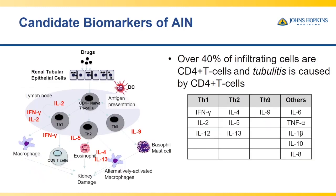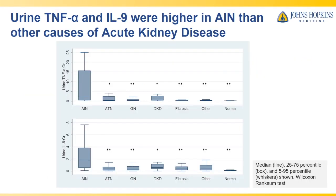These are our candidate biomarkers. We looked at the pathophysiology of the disease, and since 40% of the infiltrating cells are CD T cell lymphocytes, we hypothesized that cytokines from the TH1, TH2, TH9, and other pathways such as IL-6 and IL-10 may be important candidates to study. When we developed assays and measured these biomarkers, two biomarkers stood out which helped us separate AIN from other causes.